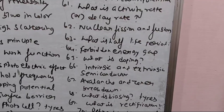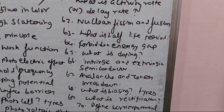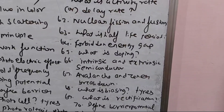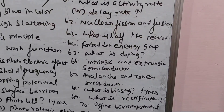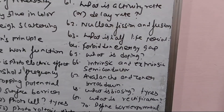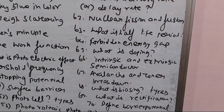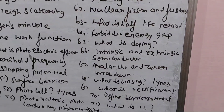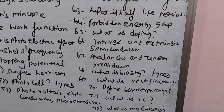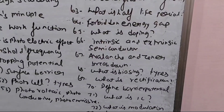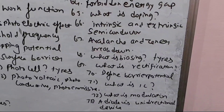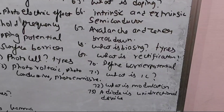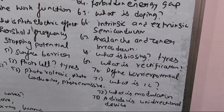Forbidden energy gap. 10th lesson: What is doping? Intrinsic and extrinsic semiconductor. Intrinsic semiconductor example. Avalanche breakdown. Zener breakdown. What is biasing and types? What is rectification? Define barrier potential. What is IC? What is modulation? Diodes are unidirectional devices.